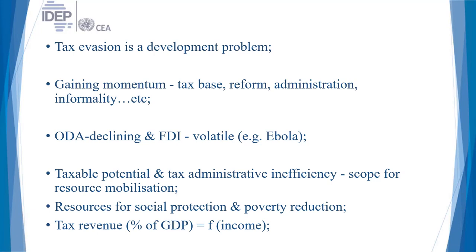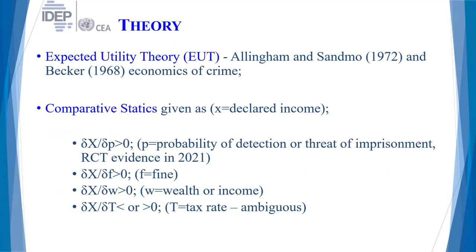Taxable potential and tax administrative inefficiency is very evident in Africa. Therefore, we have scope to mobilize more resources for social protection, infrastructure, social sectors like education and health, and poverty reduction. So the tax revenue as a proportion of GDP is a functional thing for sure. I will jump the details of the theoretical foundation of studying the economics of crime, tax evasion, and tax compliance. Rather, I will focus on some of the key variables that really drive the amount of income that you are happy to be taxed on.